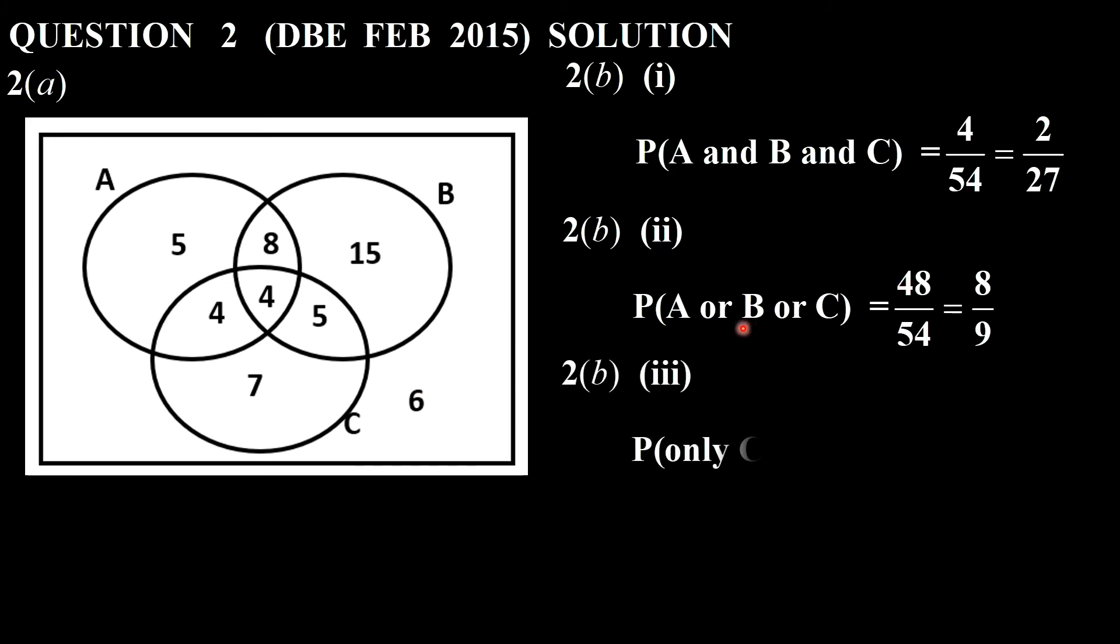The third question here, we say only C. Which is the region only C? It's only this portion here. So that's only 7 over 54.